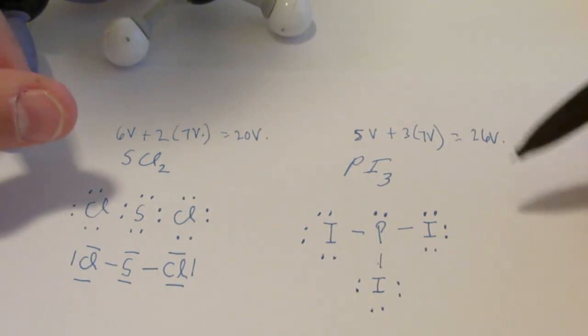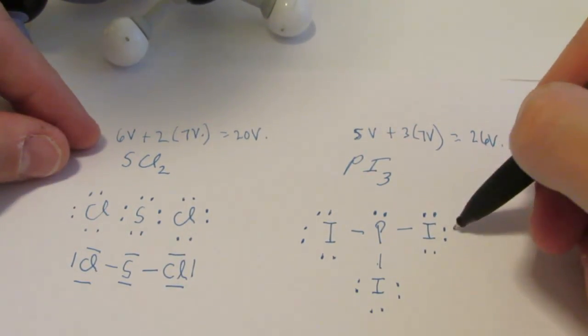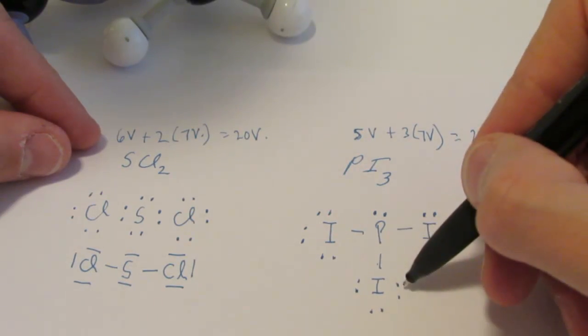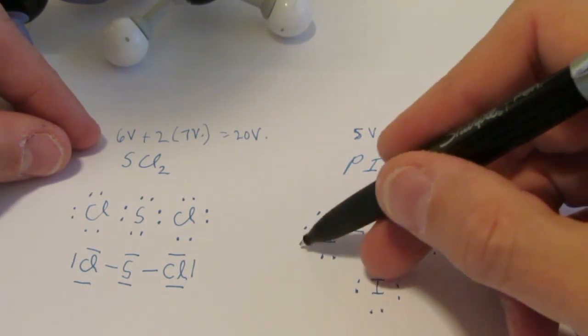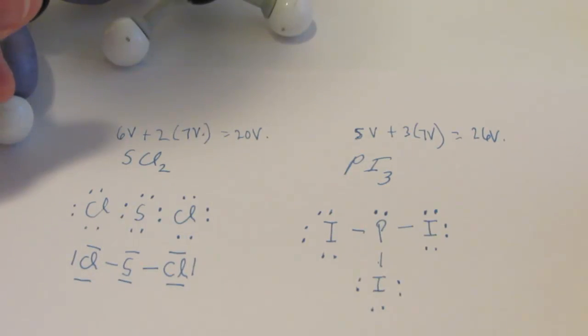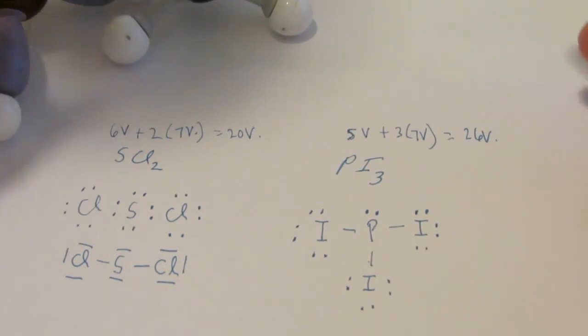And we end up with this Lewis structure. Let's count the dots to see if we've used 26. 2, 4, 6, 8, 10, 12, 14, 16, 18, 20, 22, 24, 26. Yeah, that works. That's my Lewis structure for PI3.